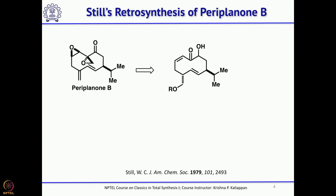According to his retrosynthetic analysis, if you look at this molecule, he thought the two epoxides could be made by two different methods. One epoxide can be made directly from the double bond using MCPBA or a nucleophilic epoxidizing agent, whereas the other epoxide can be made from the carbonyl group using sulfonium ylide or sulfoxonium ylide — basically sulfur-based ylides, which if treated with a carbonyl group can form an epoxide.